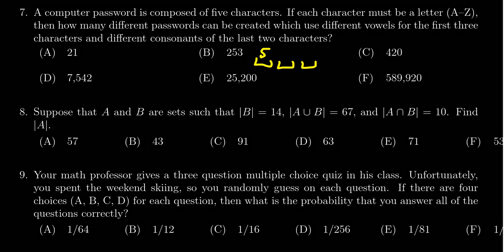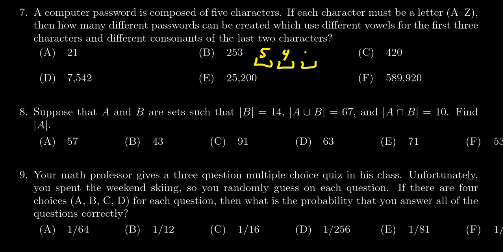So you're going to have five options for the first, four options for the second, three options for the third, and then the last two have to be consonants, which are different.